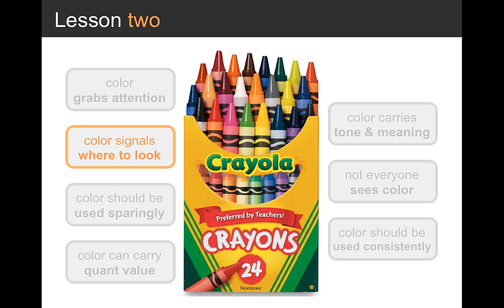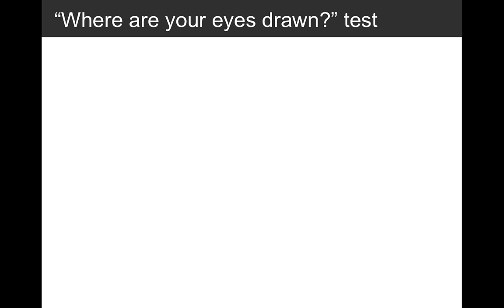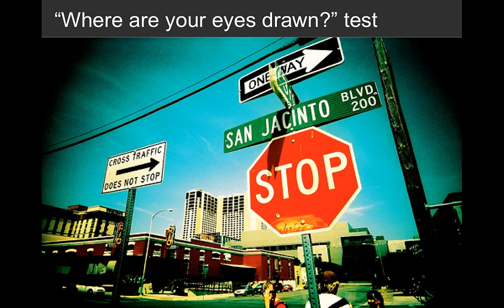Now let's shift to our second lesson: using color as a signal for where to look. There's a test I often employ to determine whether I'm using pre-attentive attributes well — I call it the 'where are your eyes drawn' test. You create your visual, look away and look back, and simply note where your eyes go first. That's likely where your audience's eyes will go first too. Let's do this with a series of pictures — just take note of where your eyes go first as I flip through them.